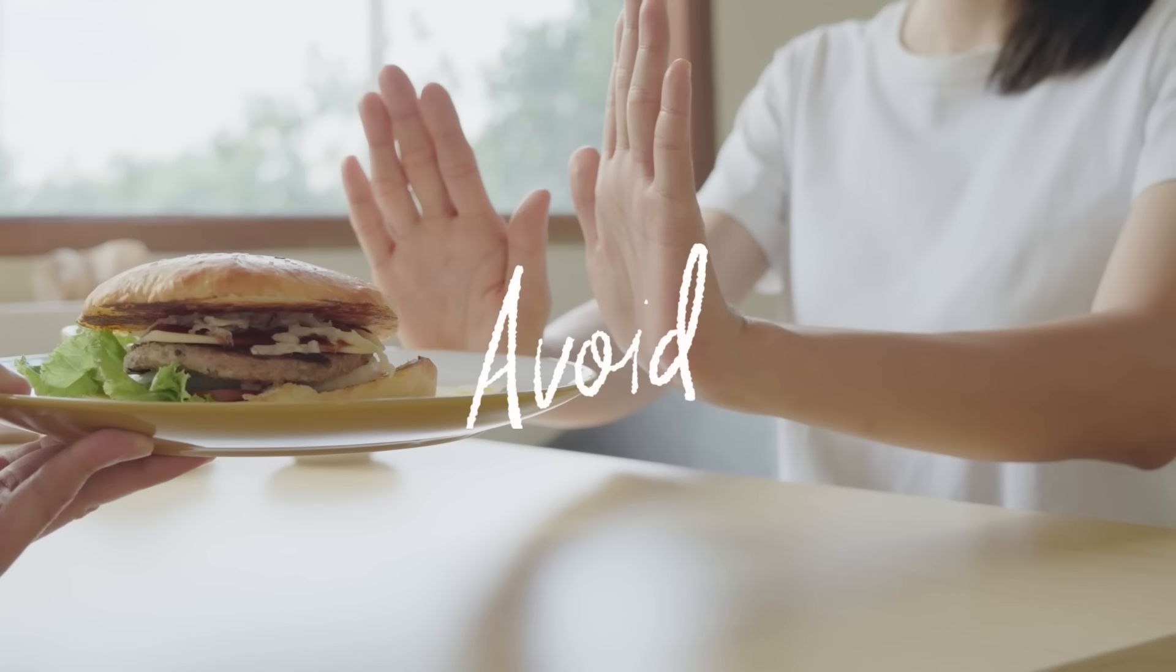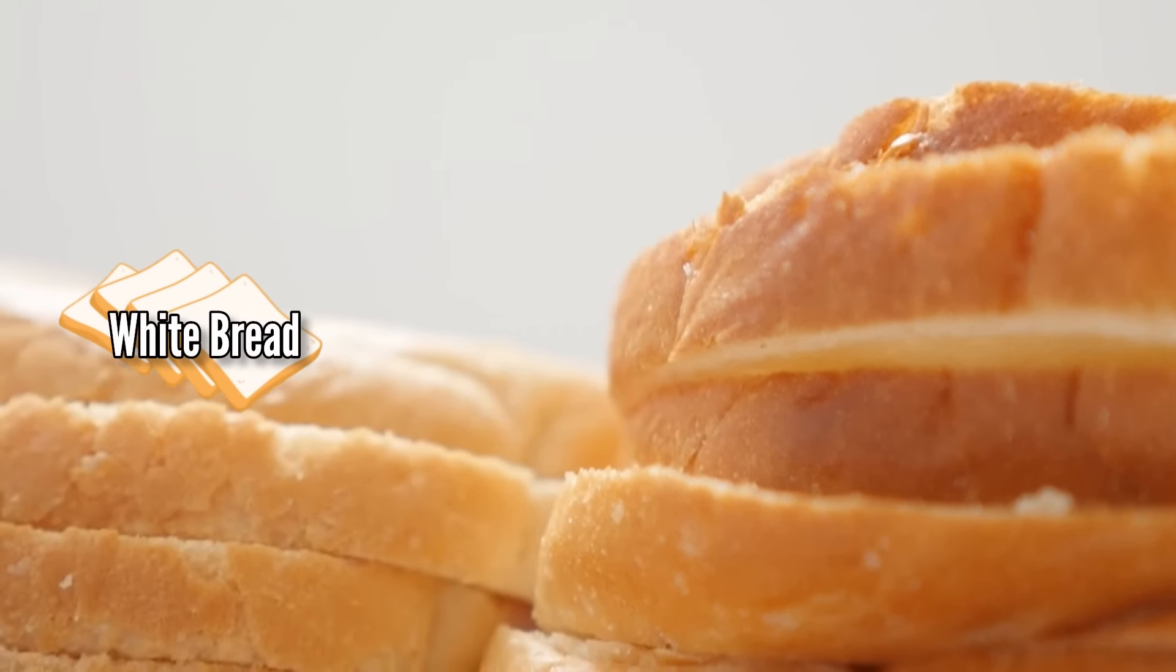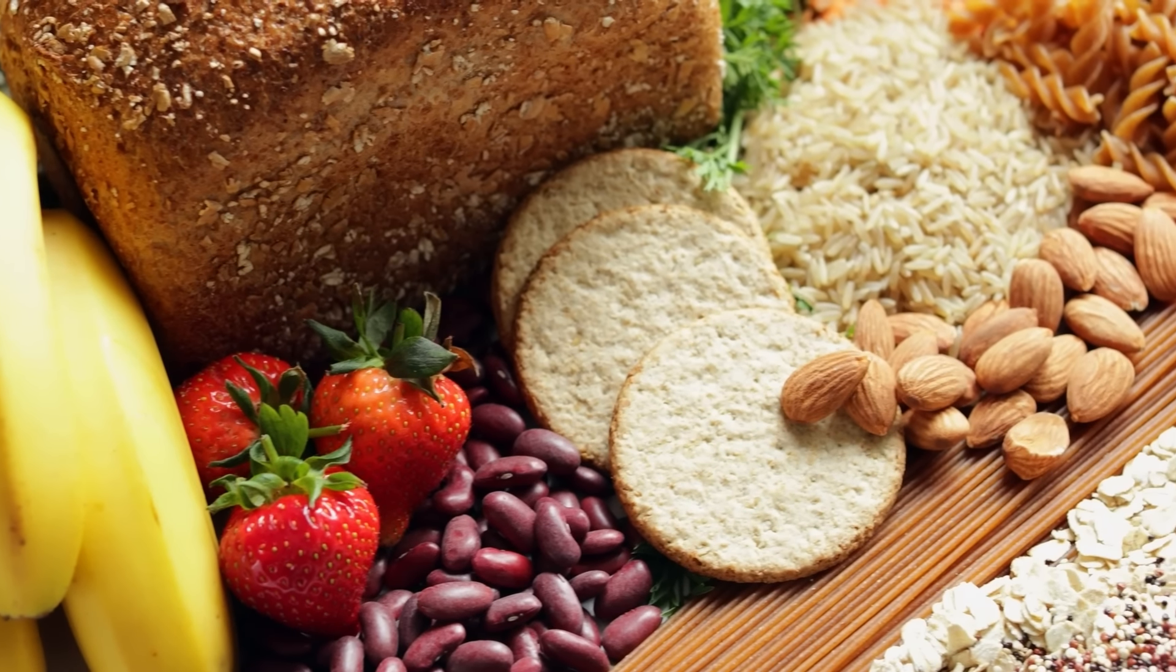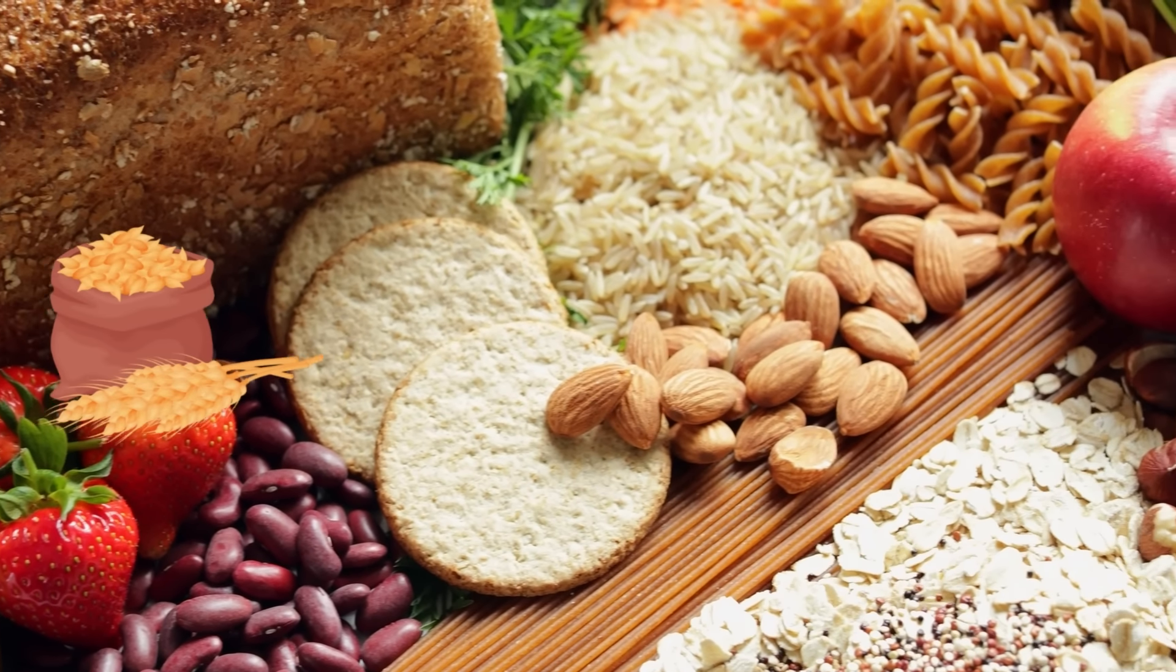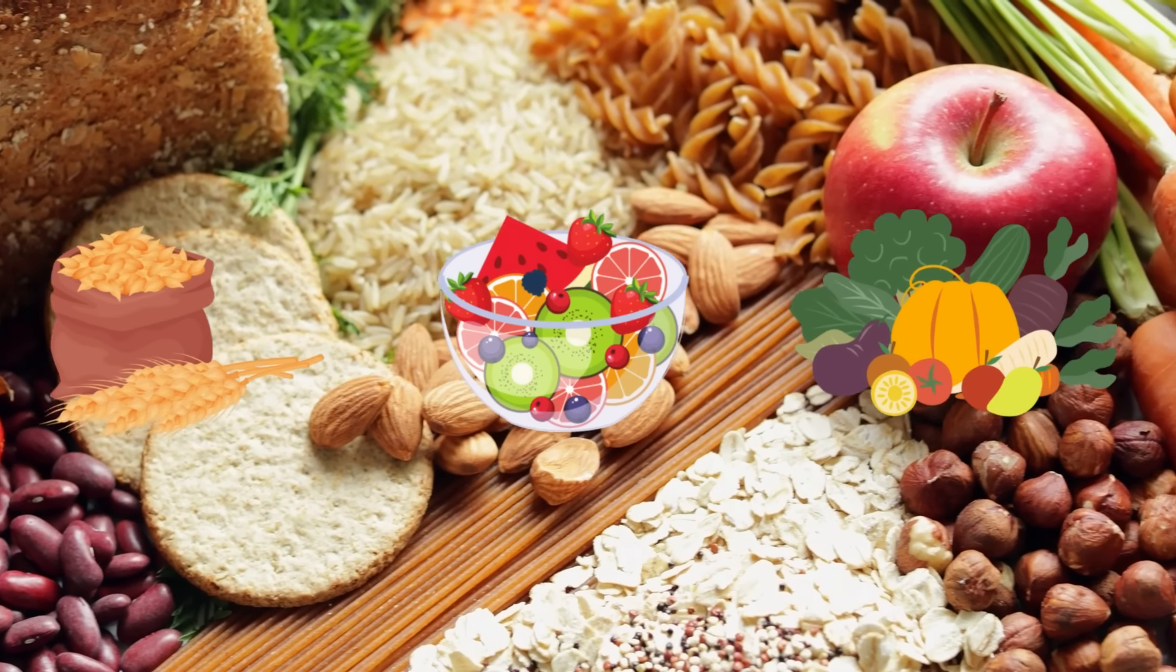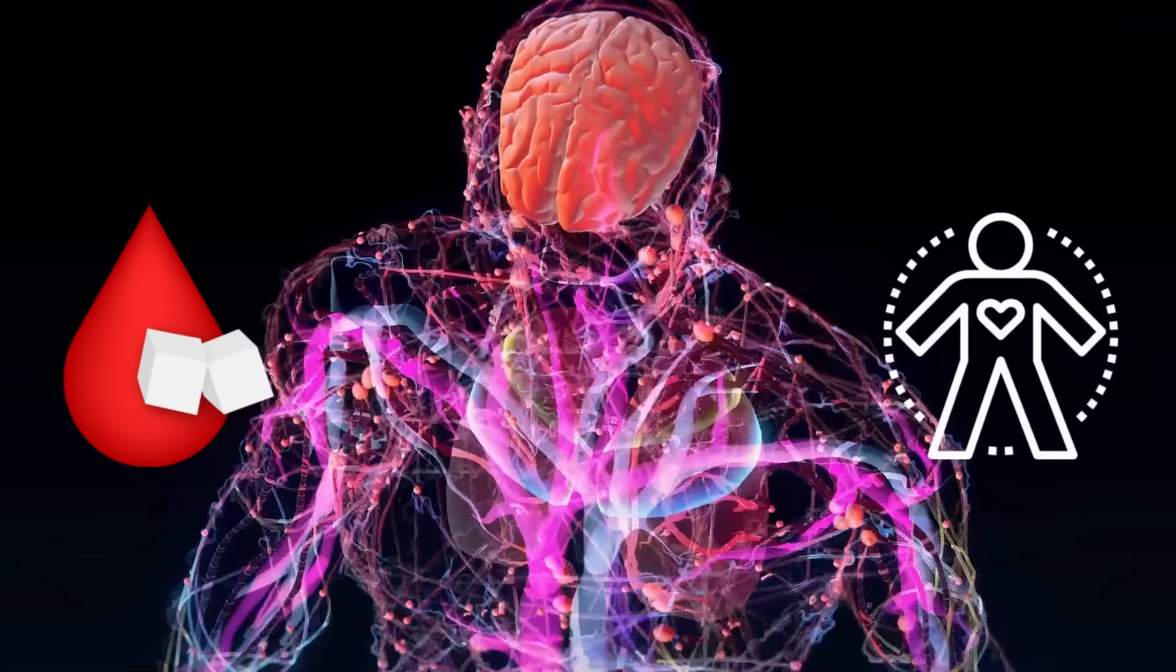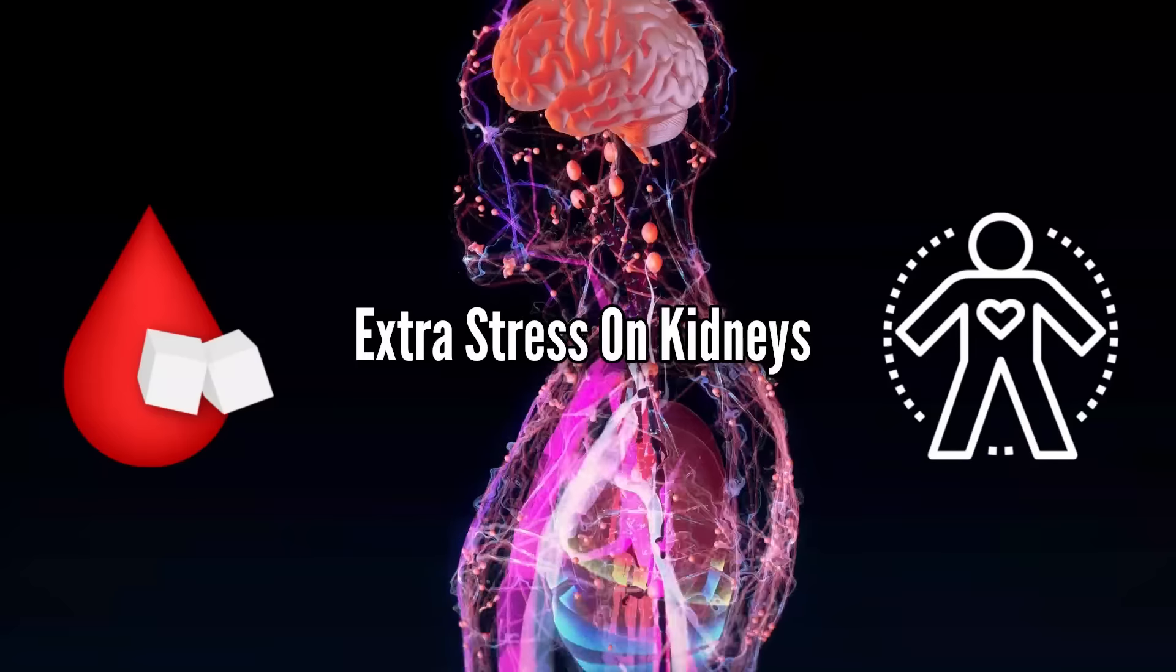Always try to avoid things made of refined carbs, like white bread, white rice, and pasta. Instead, opt for complex carbohydrates, like whole grains, fruits, and vegetables. These things are usually high in fiber, help you manage your blood sugar levels, and provide energy without putting extra stress on your kidneys.